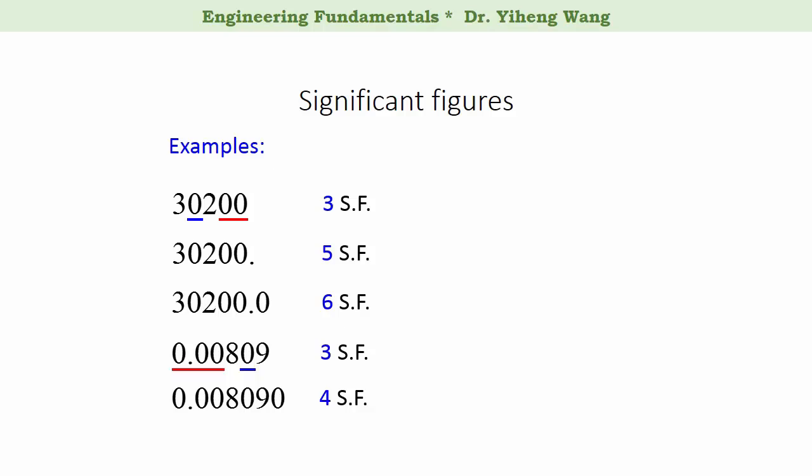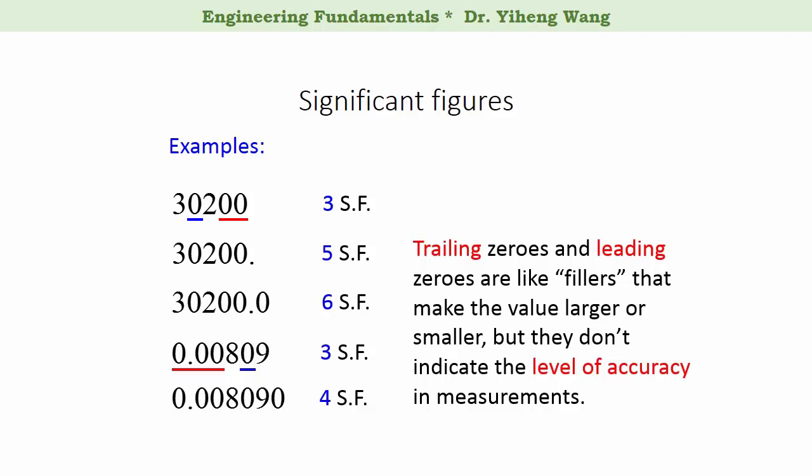Hopefully by now you understand more what significant figures mean. As you might notice, trailing zeros and leading zeros — those insignificant figures — are like fillers. They are there in order to indicate the magnitude of the number — is it a big number or is it a very small number? But they do not indicate the level of accuracy in measurements.